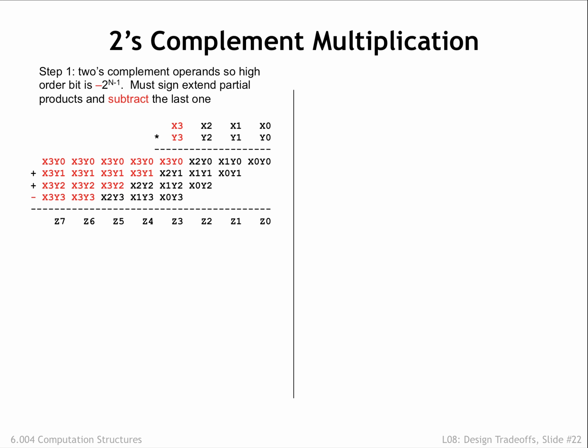And, of course, since the higher-order bit of the multiplier has a negative weight, we'd subtract instead of add the last partial product.